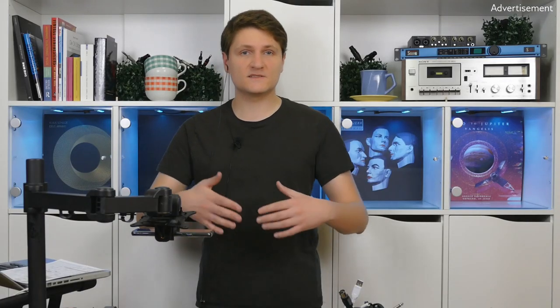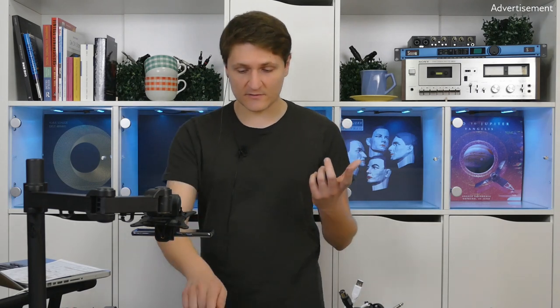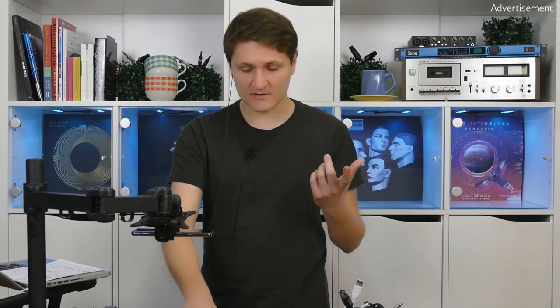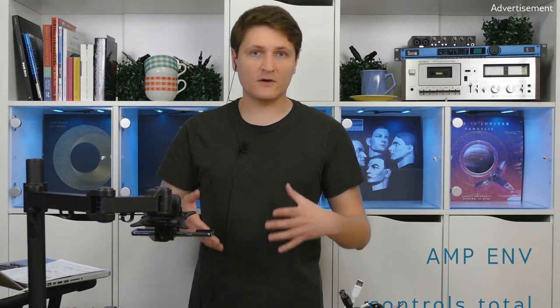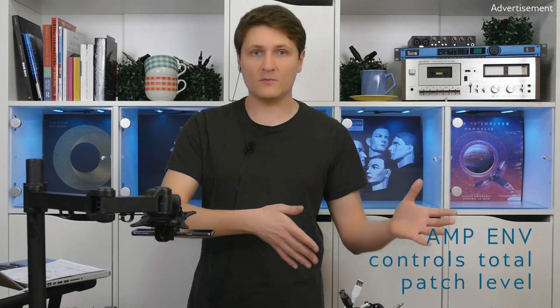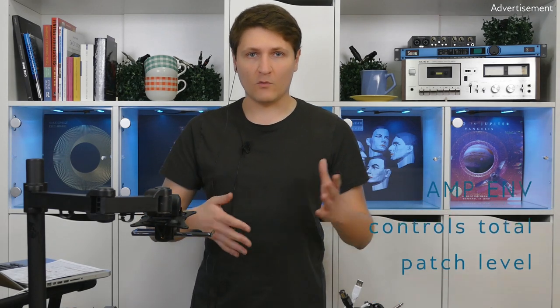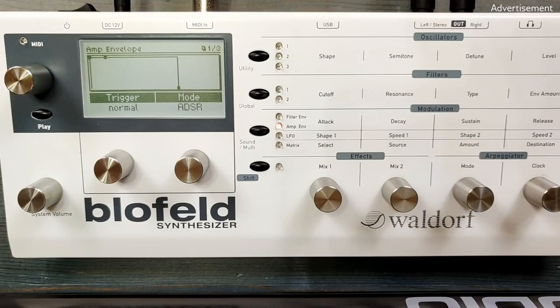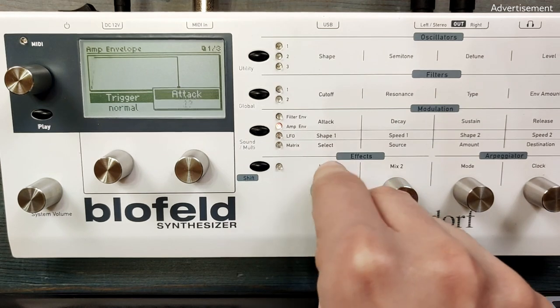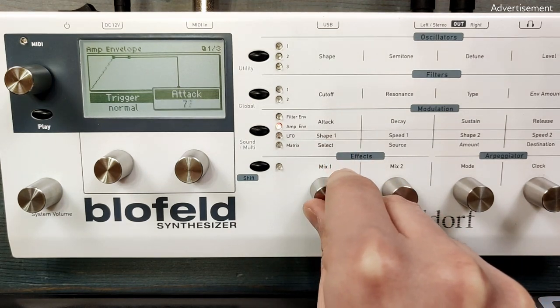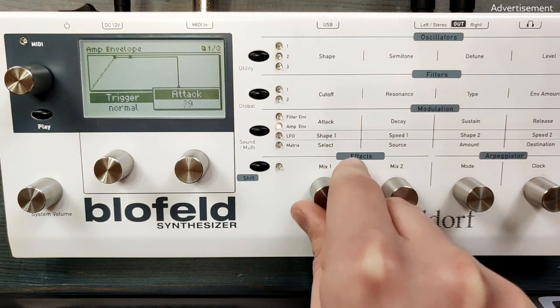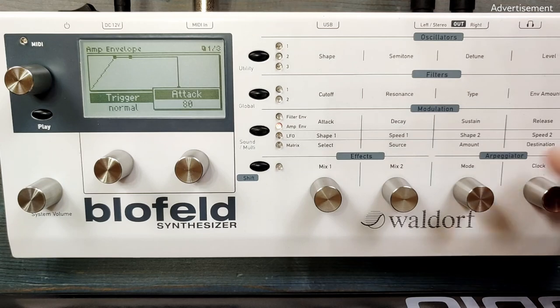This sound is cut off immediately when I release the keys because we have to change the amp envelope as well. As you may know, everything goes through the amp envelope no matter what. So let's change the attack here as well to about 80, and the release to 90.